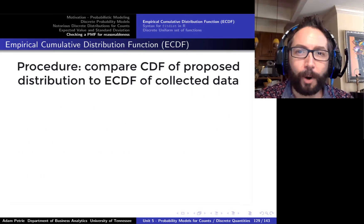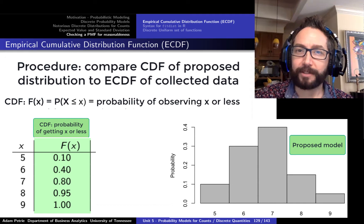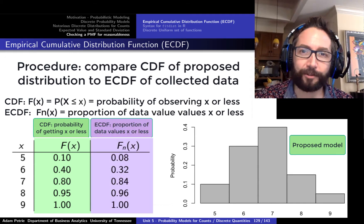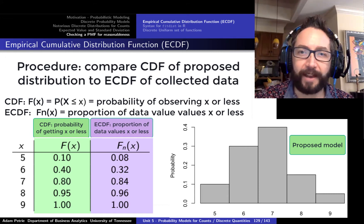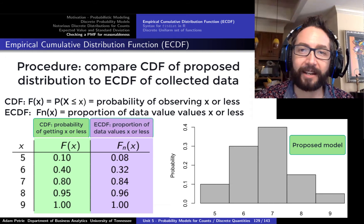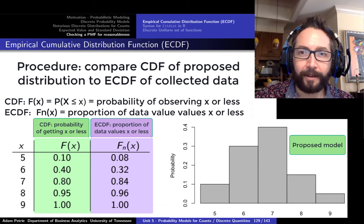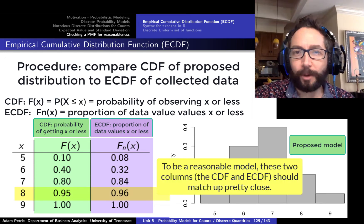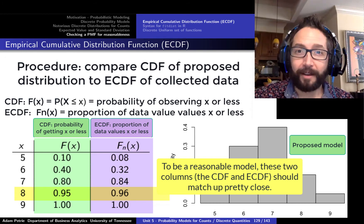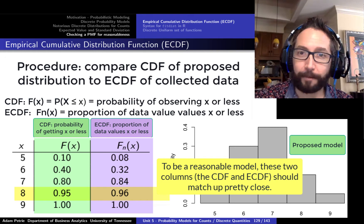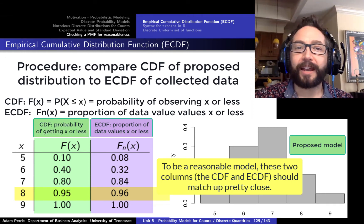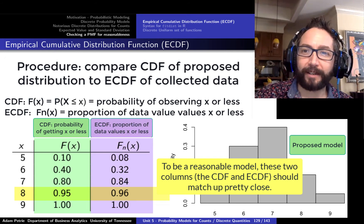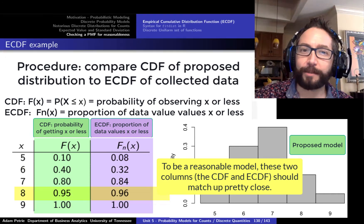What we're going to do is compare the CDF of the proposed probability model — that capital F, the probability of observing a value of at most little x — with the empirical cumulative distribution function, the ECDF. The ECDF is simply the fraction of data values that are less than or equal to some number, as we vary that number to bigger and bigger quantities. So what fraction of data values are less than or equal to 8? That should match up well with the probability of observing a value at most 8 from your proposed model.